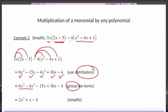We group the like terms by writing them next to each other so we can simplify easily. -15x and +16x are also like terms, so we group them together. 6x² - 4x² = 2x², -15x + 16x = +x, and -4 stays on its own. So the final answer is 2x² + x - 4.